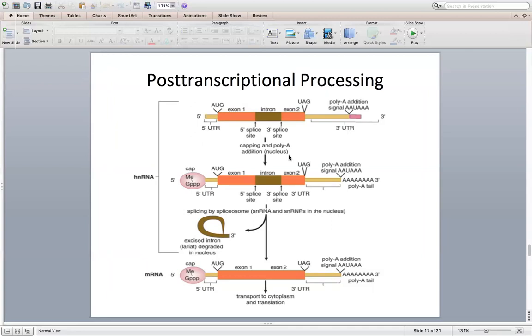The first one is going to be that intron and exon splicing. Splicing of the transcript is to remove non-coding sequences, which are called introns, and then ligate the coding sequences, which are called exons.